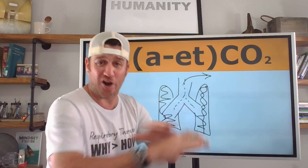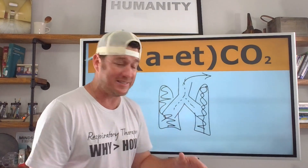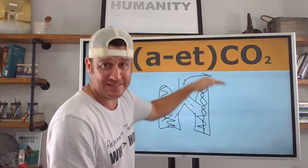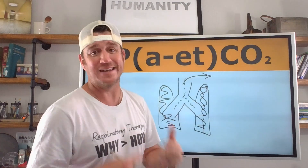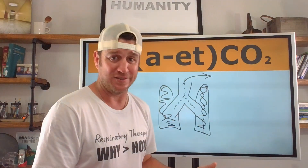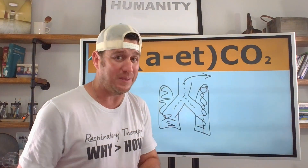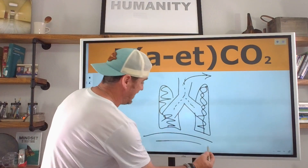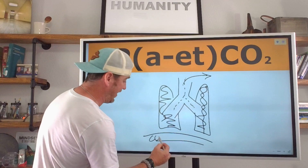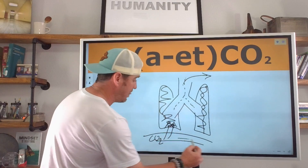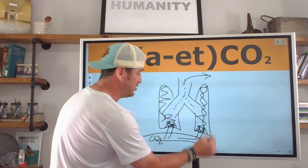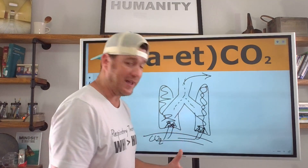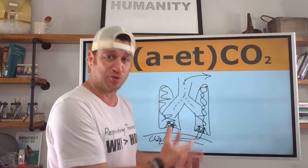Anatomical and alveolar dead space are the reason why we see an increase in this gradient. If you eliminated all of that, at best arterial CO2 would equal end-tidal CO2, but end-tidal can never be greater than arterial CO2, because end-tidal is a representation of how much CO2 is coming back and diffusing into the alveolar units.